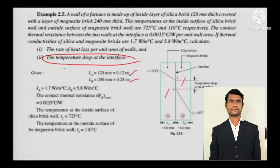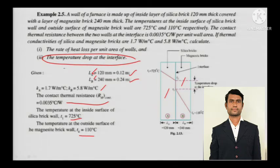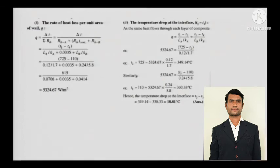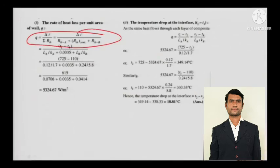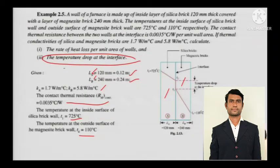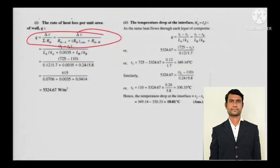Everything is given for this composite wall. KA, LA, and LB (the thicknesses) are given. The contact thermal resistance is also given. The temperatures at the inside and outside surfaces are given. For the rate of heat loss per unit area Q, it is delta T divided by the sum of RTH. So it will be RTH_A plus RTH_contact plus RTH_B. The contact RTH is given in the numerical, so just solve it and calculate Q.